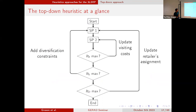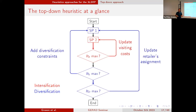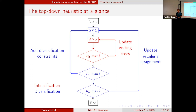At a glance, the heuristic is as follows: I start with the first sub-problem — one warehouse multi-retailer — decide on production quantities at the factory and on transportation decisions between the plant and the warehouses. Second, I want to have some routes, and this is where I have an intensification phase where I update the visiting plan. As I have a fixed assignment initially, I have some diversification iterations to either update the retailer's assignment or to add diversification constraints on the setup. This is the top-down approach.